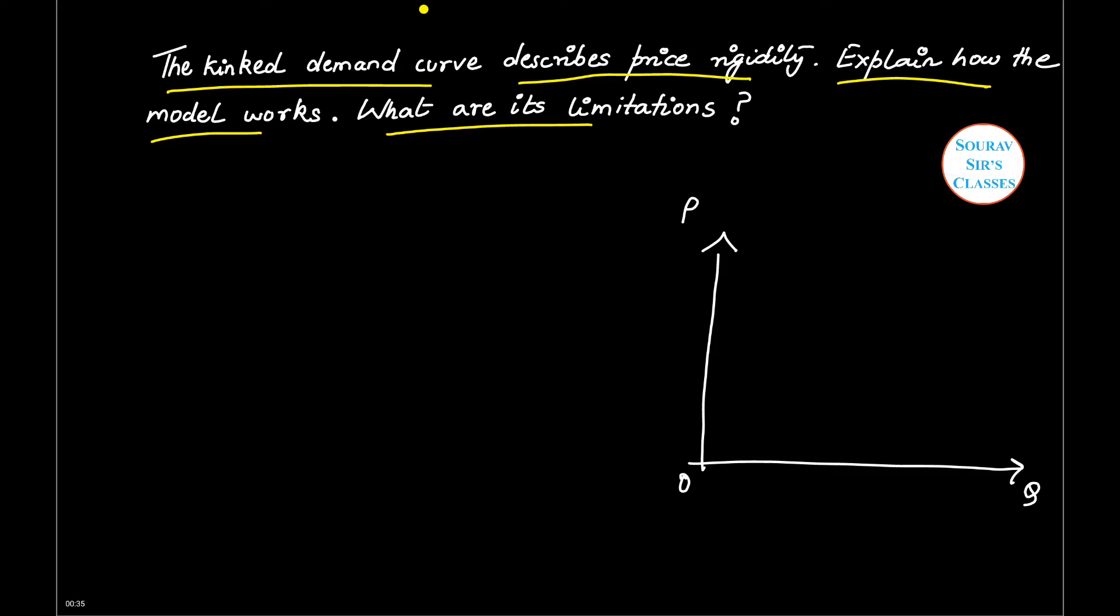Now, first let us see how a kinked demand curve looks like. So it is like this. What we see is that this line, the demand curve, is not smooth. It has a kink at this point. So it is kinked at this point. This is an example of a kinked demand curve.